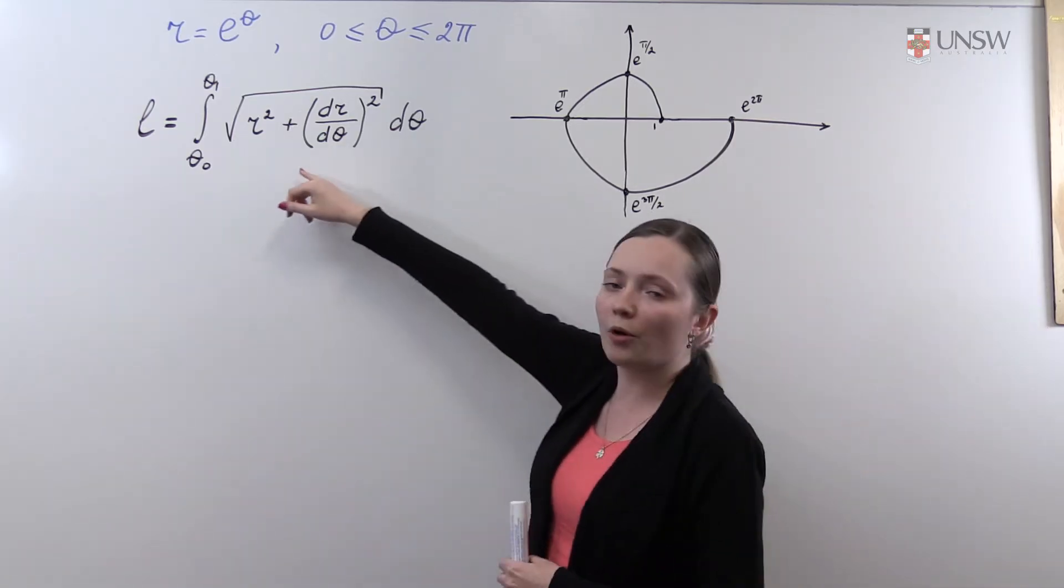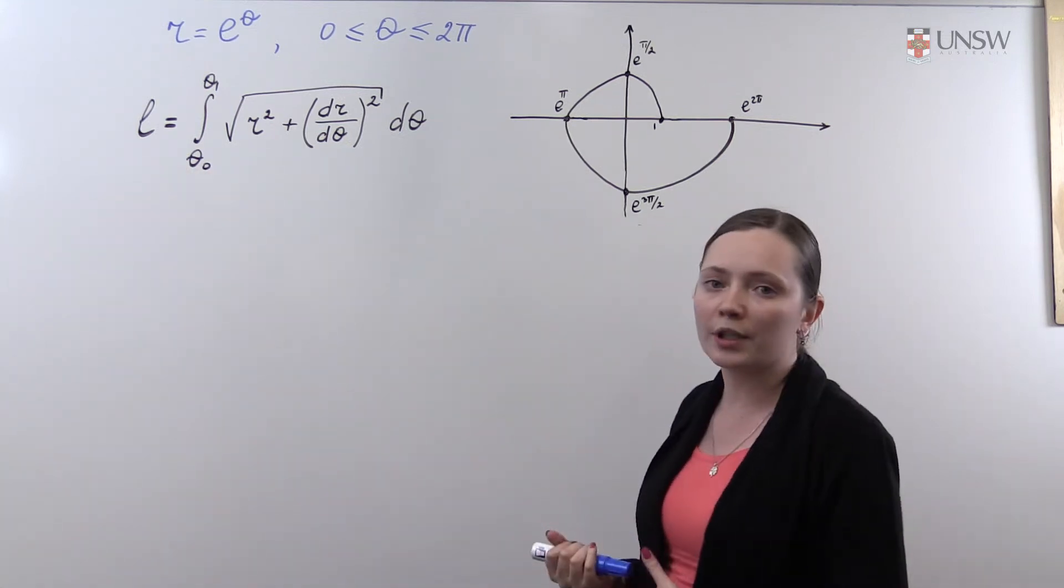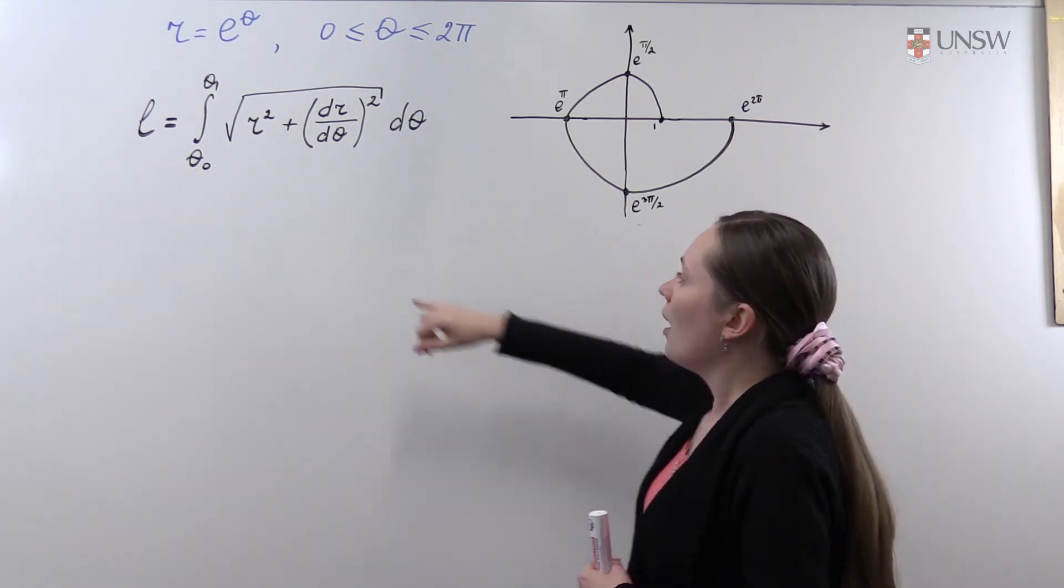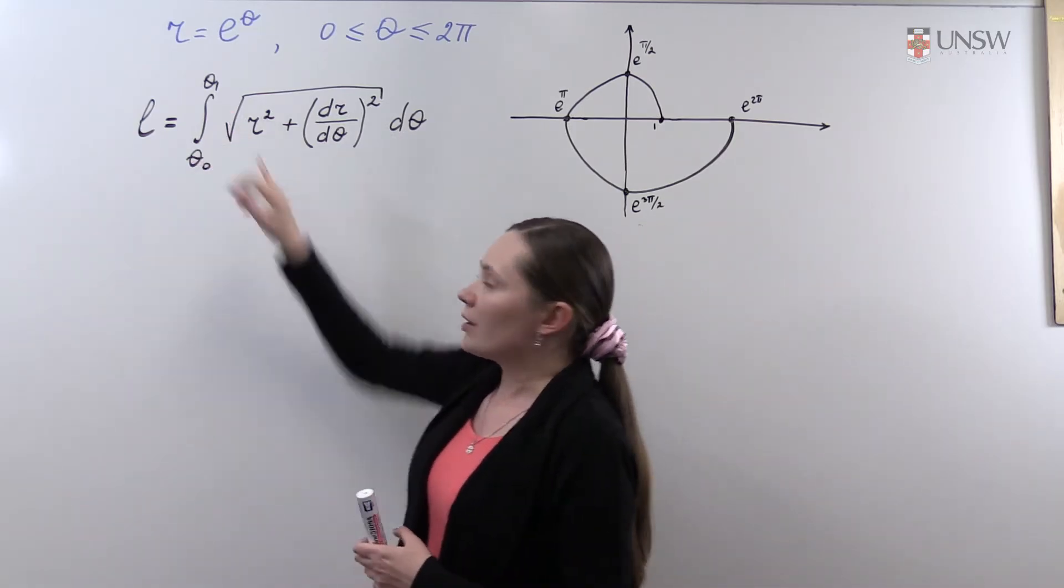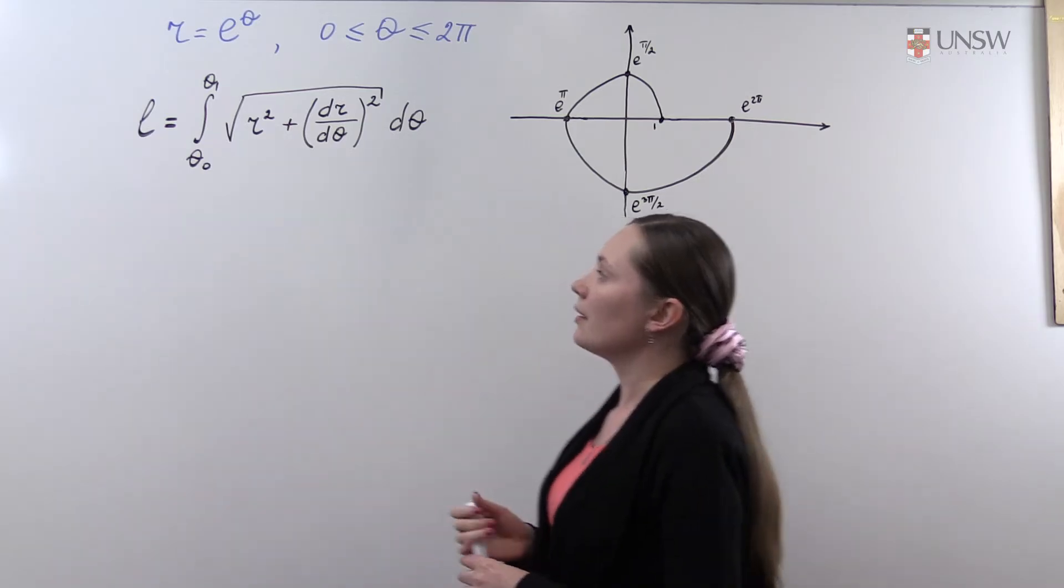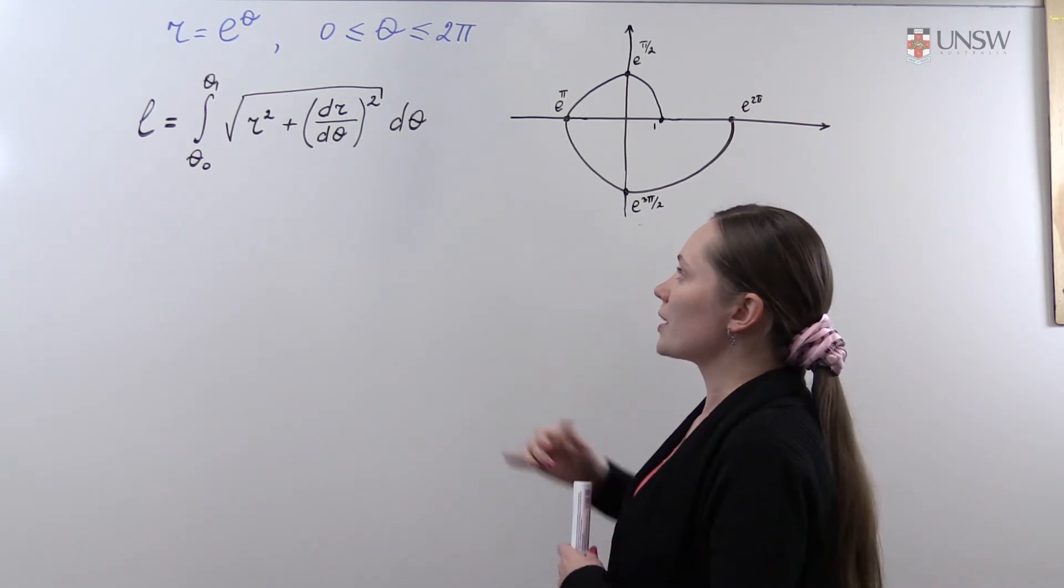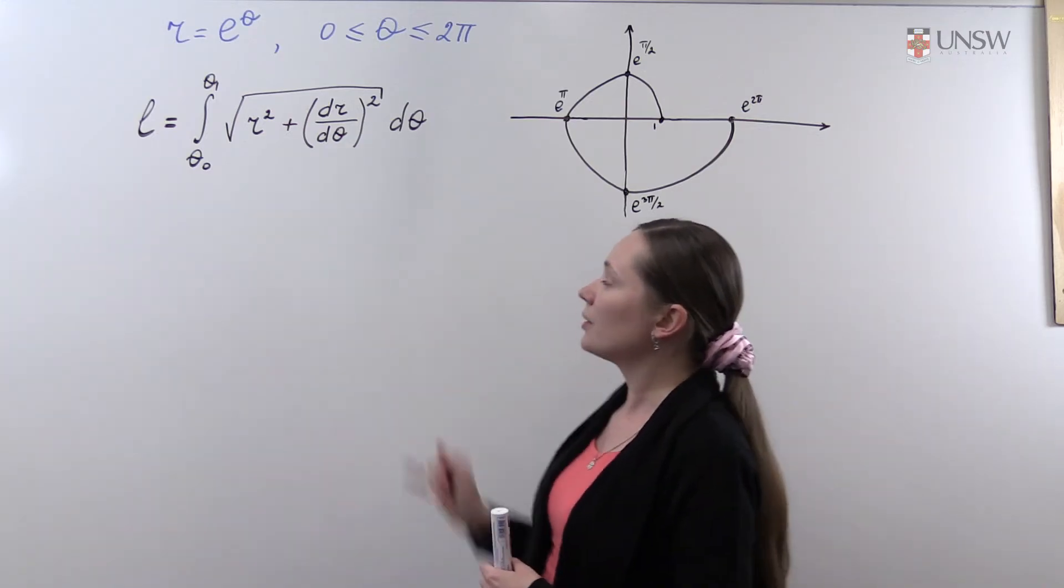Let me remind you of the formula. The length of a curve given in polar coordinates from theta 0 to theta 1 can be found by this formula: the integral from theta 0 to theta 1 of the square root of r squared plus the derivative squared.